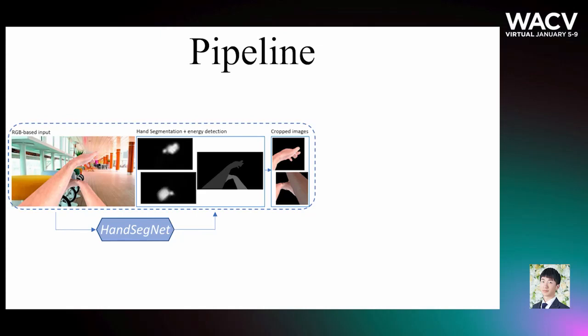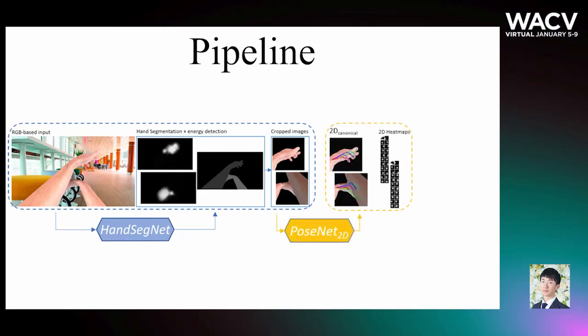The segmentation masks are then used in an algorithm called PoseNet 2D, which uses a convolutional pose machine as its backbone to estimate and refine the 2D heat map of the joints. An algorithm we call PoseNet 3D uses the 2D heat map as an input to estimate the 3D canonical hand poses.